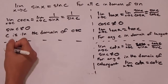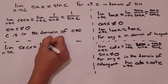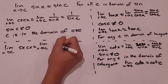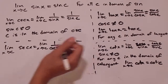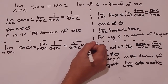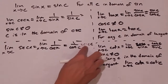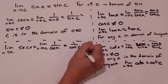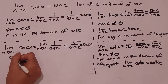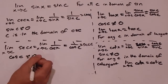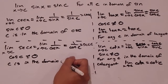Similarly, the limit as x approaches c of secant of x equals the limit as x approaches c of 1 over cosine of x, which equals 1 over cosine of c, which is secant of c. This is provided that cosine of c does not equal 0, or that c is in the domain of secant.